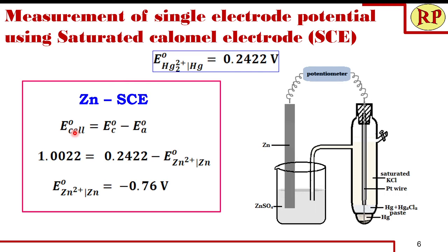To demonstrate how the SCE is used to determine standard electrode potentials, consider zinc, which has a lower standard reduction potential than the SCE. The SCE acts as cathode and zinc as anode. Connected via potentiometer — with the side tube acting as salt bridge — the potentiometer reading is 1.0022 V. Using E_cell = E_cathode − E_anode, the standard reduction potential of zinc is calculated as −0.76 V, matching the value obtained using the standard hydrogen electrode.